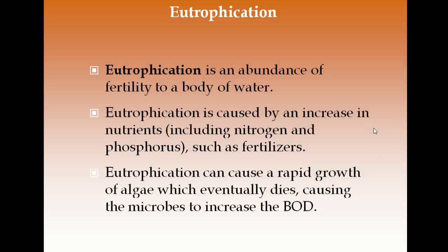Eutrophication is the abundance of fertility — over-fertilization. Adding nutrients such as nitrogen and phosphorus (as nitrates and phosphates) from fertilizers, pesticides, and other chemicals causes rapid algae growth. The algae eventually dies, microbes consume more oxygen breaking it down, and oxygen levels decrease for other organisms. A eutrophic lake is an older lake with cloudy, dirty water full of algae and decomposition.